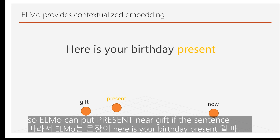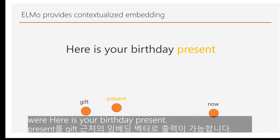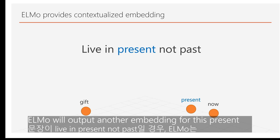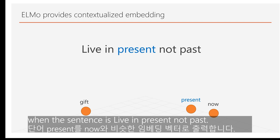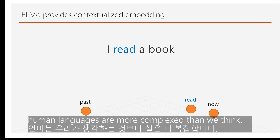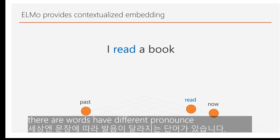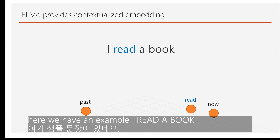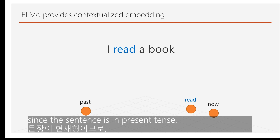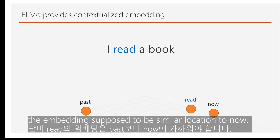Our savior ELMo comes in. ELMo is a function which takes context as input and outputs an embedding. So ELMo can place 'present' near 'gift' when the input is 'here is your birthday present', and give a different embedding for 'present' when the sentence is 'live in the present, not the past'. Human language is more complex than you think — consider building a speaking machine where the same word has different pronunciations depending on context.